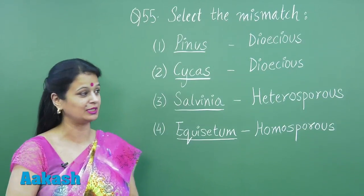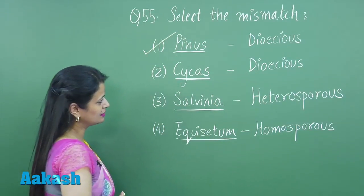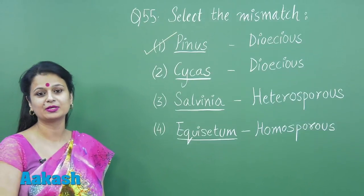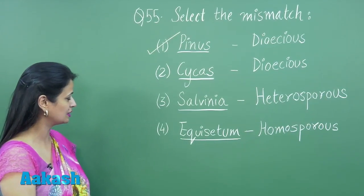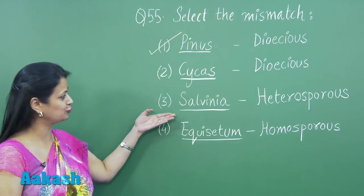Second option: Cycas, it is dioecious, yes. That is, the male and the female structures are present on different plant bodies. Salvinia, yes, it is an aquatic pteridophyte which is heterosporous.